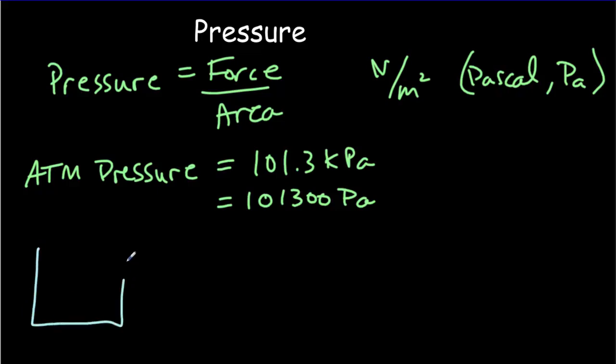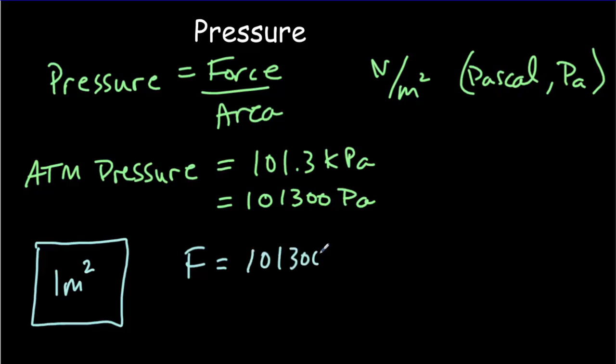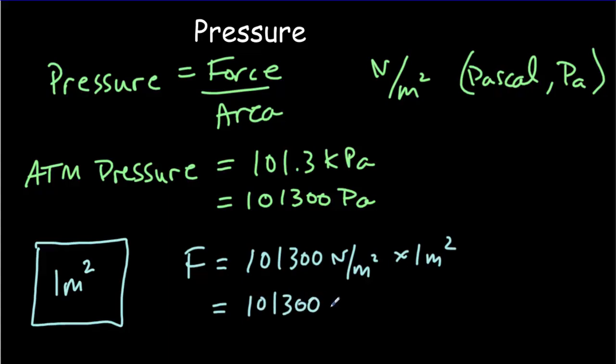Consider a window with an area of one meter squared. The force on that window equals the pressure times the area — 101,300 pascals times one meter squared — giving over 100,000 newtons, an absolutely enormous force. It's not a problem because we have the same force on each side, so there's no unbalanced force. But if we sealed a house and pumped all the air out, we'd have an unbalanced force and the window would implode, shattering inwards.